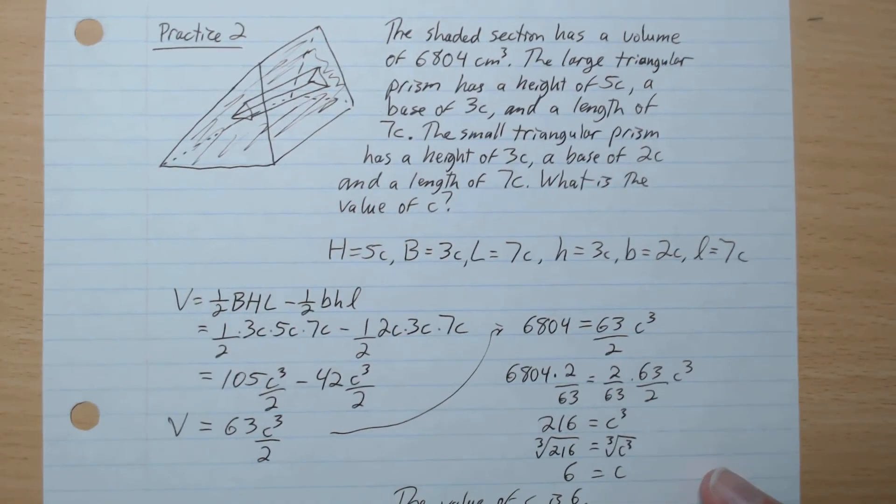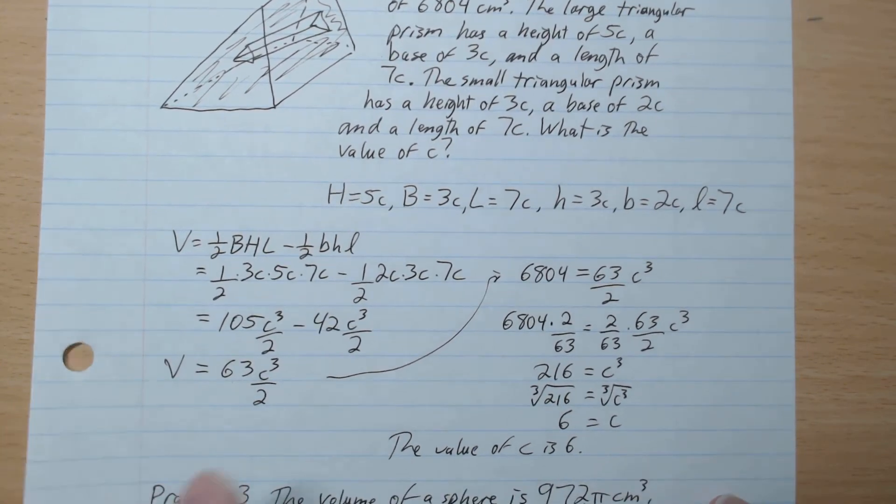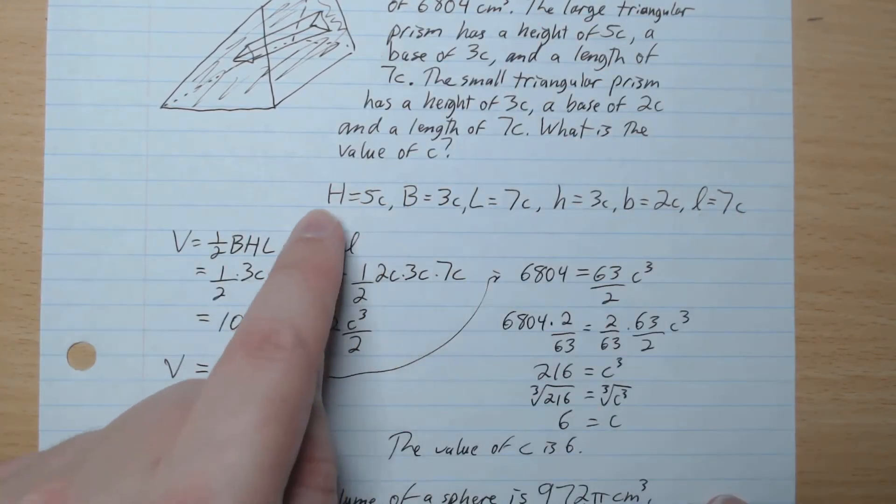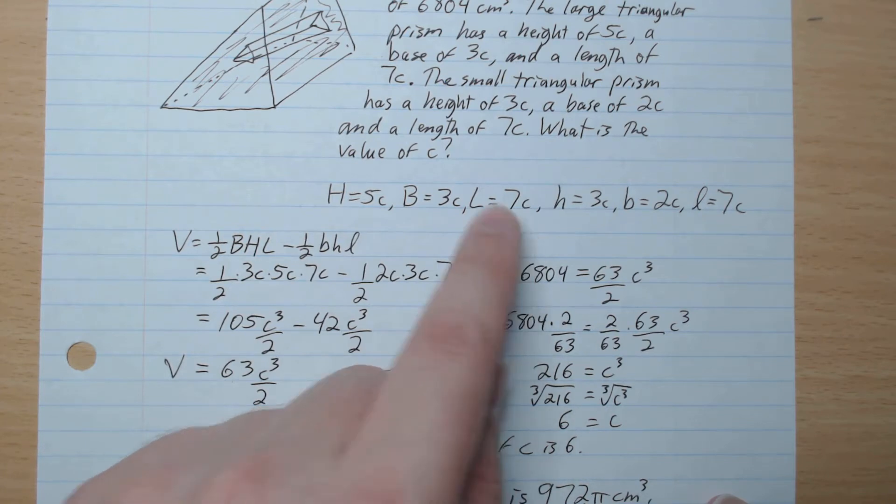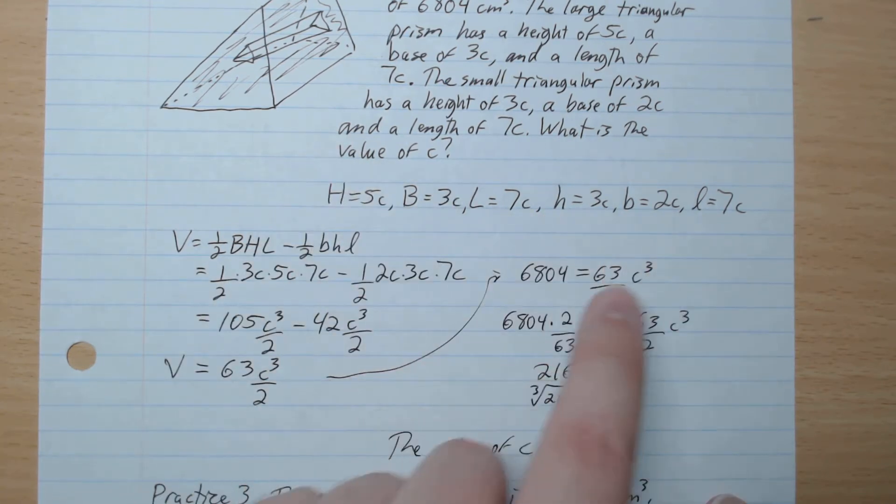Okay, we're back. So what do we got here? We know from the problem. I'm just going to write it out. HBL for the big, big triangle. HBL for the smaller triangular prism.